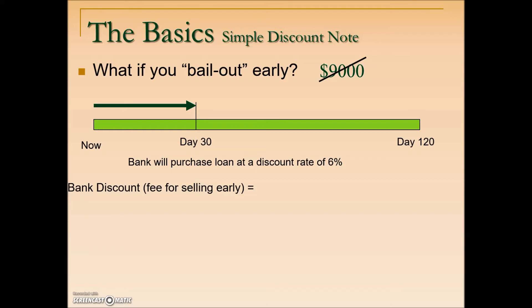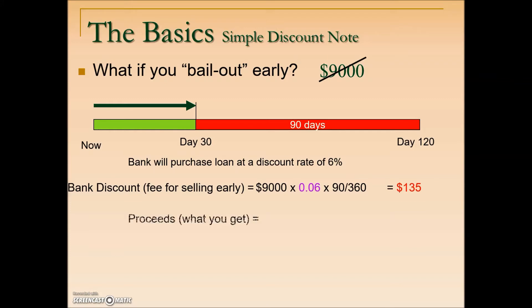We take the note's value times the discount rate times the number of days the bank will hold it until maturity. The maturity term is 120 days; the bailout is after only 30 days — the difference is 90 days. So the bank discount is $9,000 times the discount rate times 90/360. The original holder then receives the maturity value minus the bank discount for a value of $8,865.